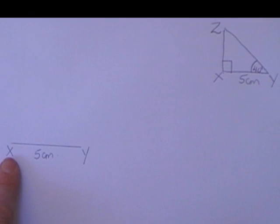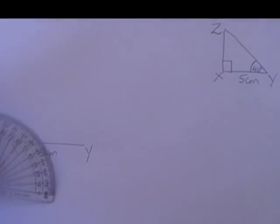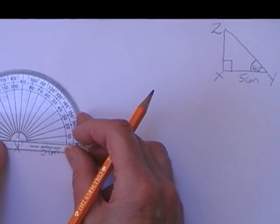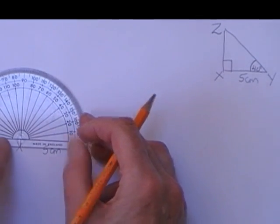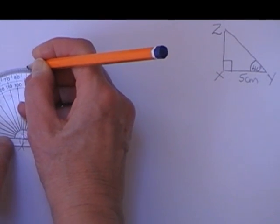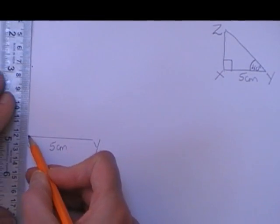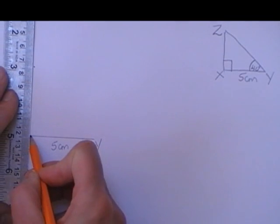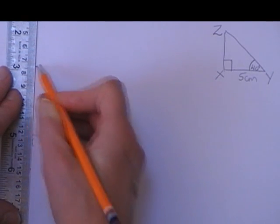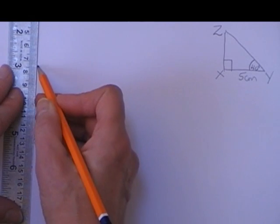This time I want 90 degrees from X. So I'm using my protractor, put in the dot for 90 degrees and again I don't know the length of this side so I'm joining X to the dot and I'm going to produce that on out.